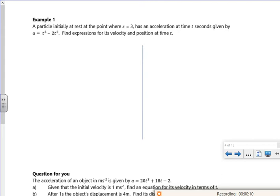So it says the particle is initially at rest, so that tells me that when t is 0, v is 0. At a point where s is 3, so that tells me when t is 0, s is 3. So this is important information when we find c. So this is for finding that c value.